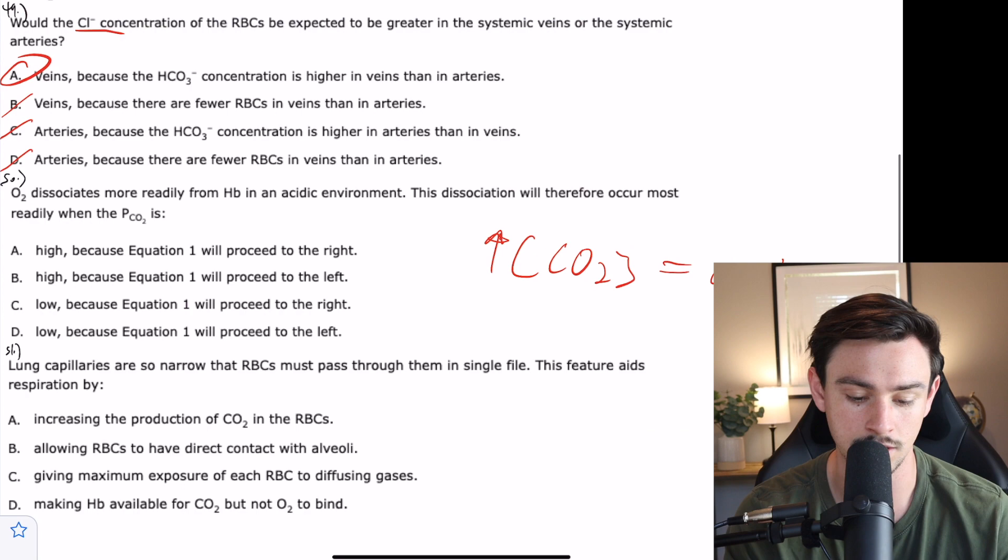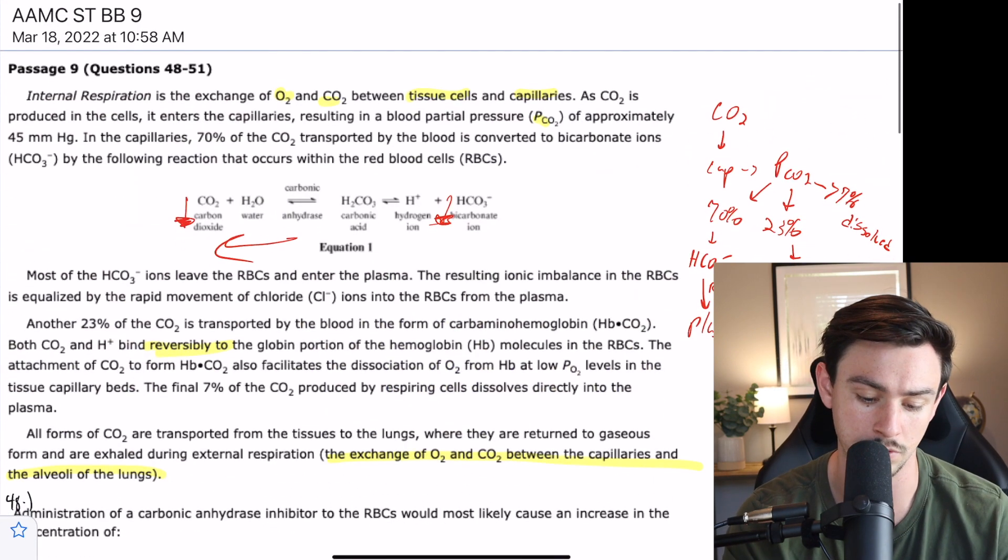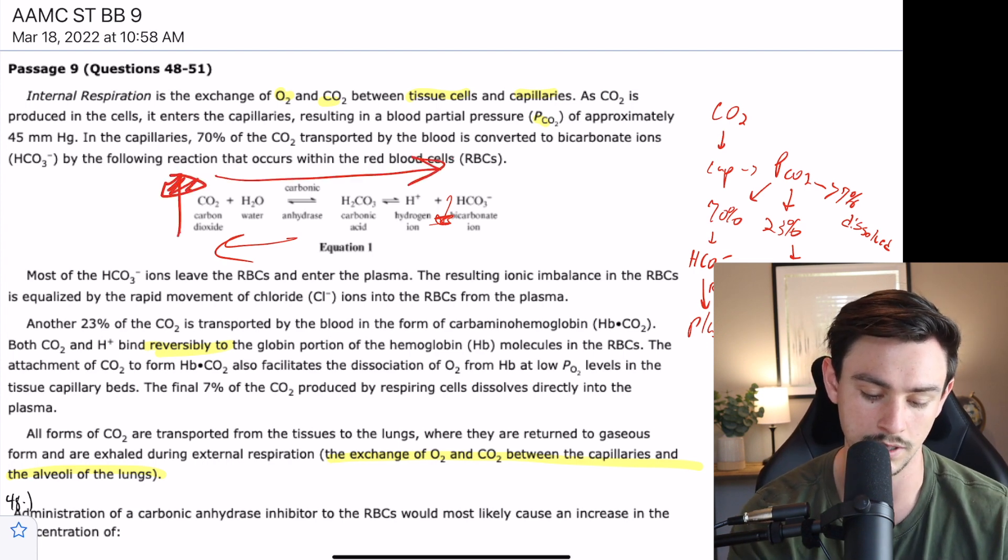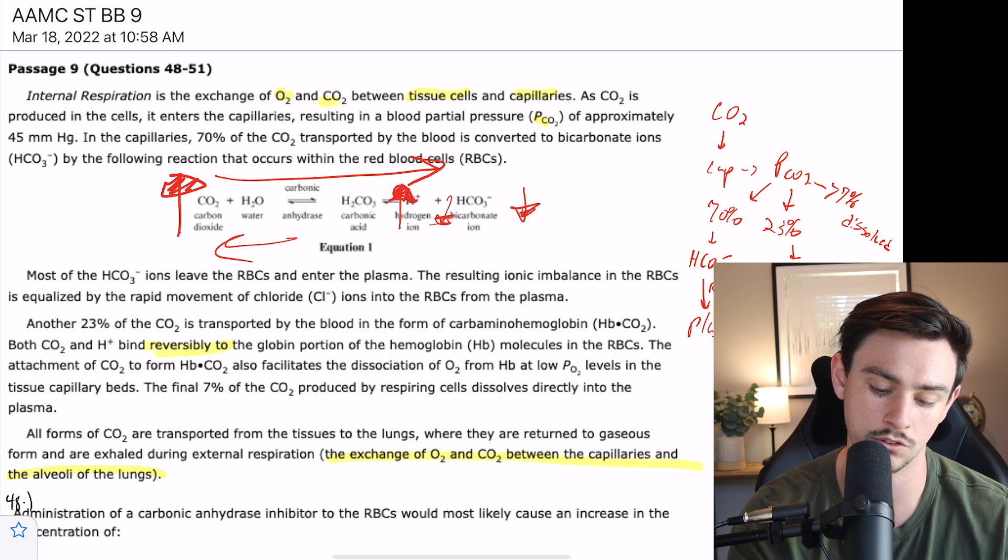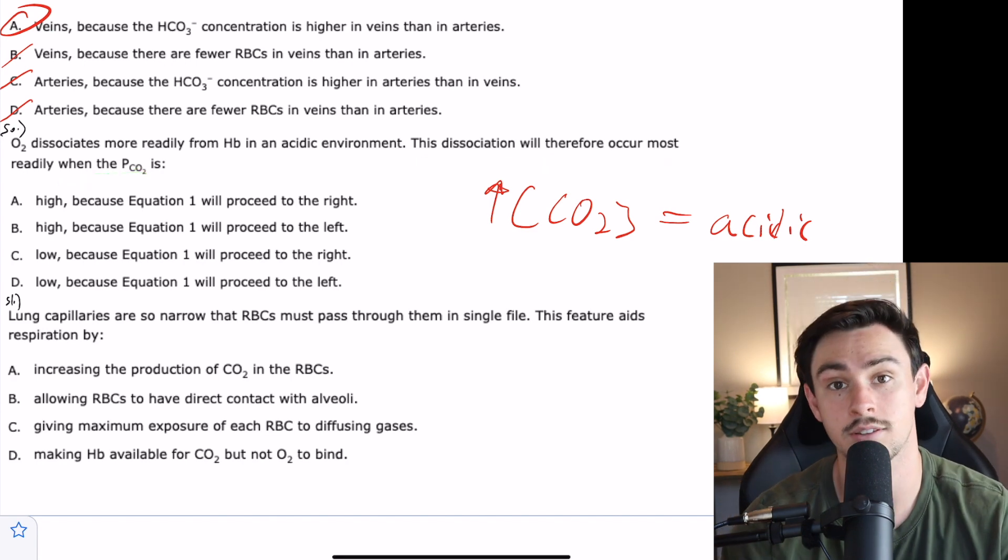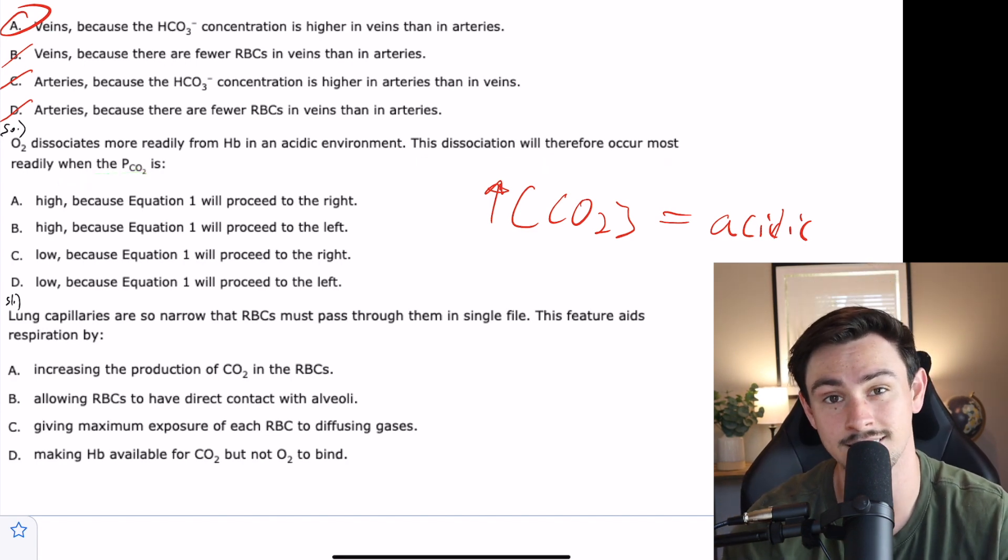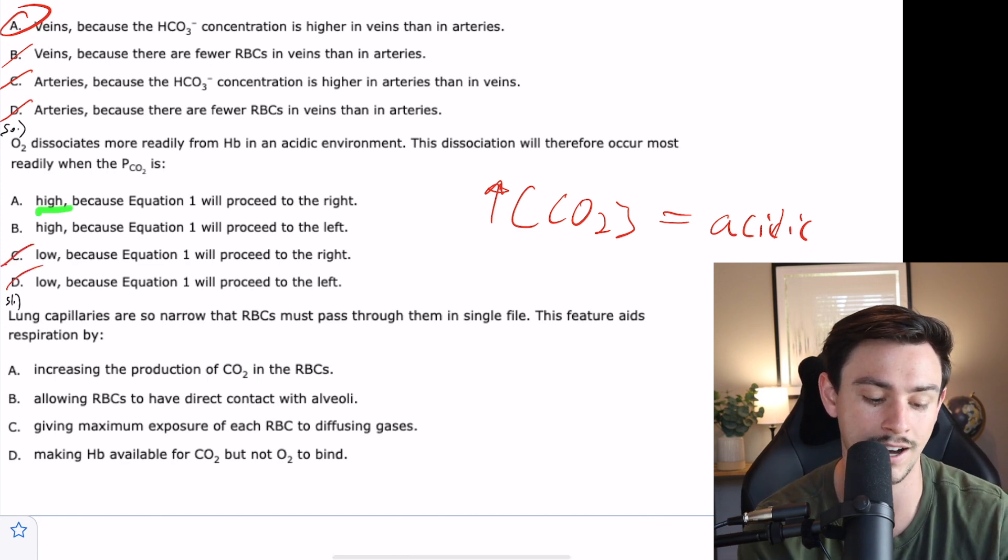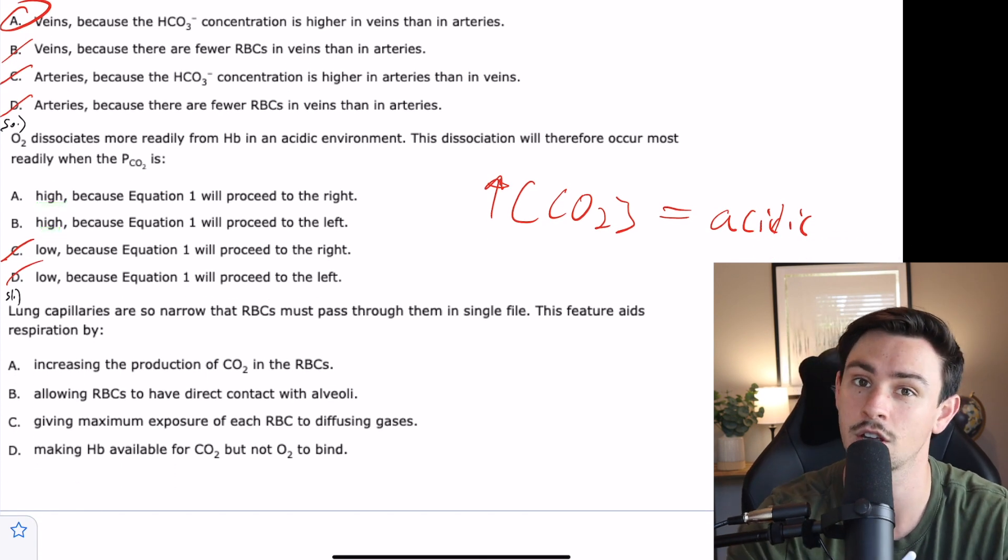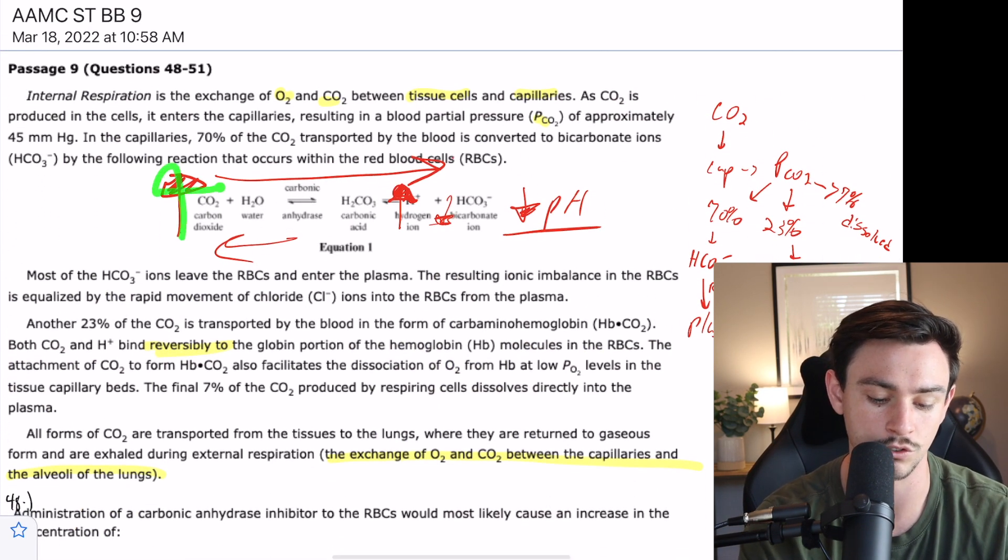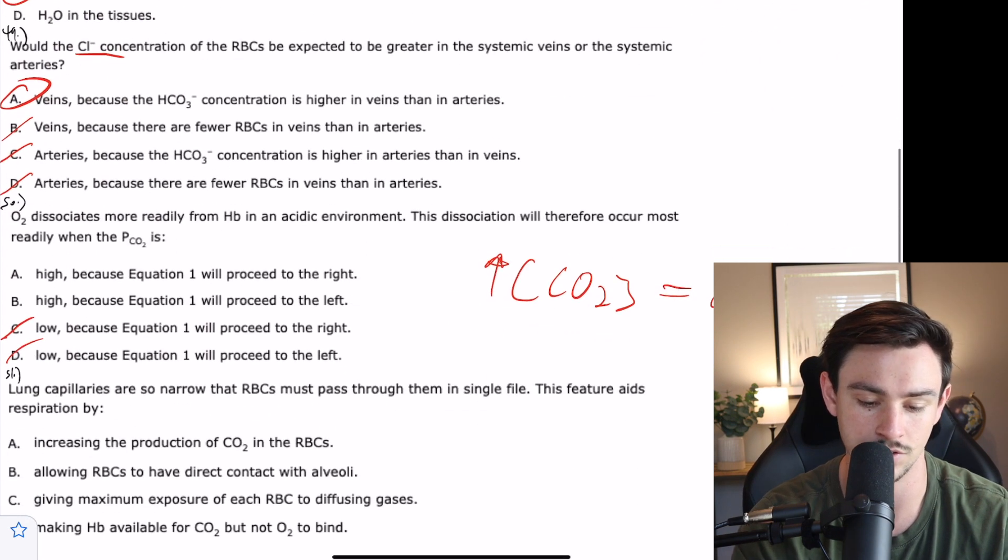Let's look at this equation and use Le Chatelier's principle to figure it out. If we have a high amount of CO2, that's going to drive this reaction to the right, which would mean we would have an increase in hydrogen ions, which means a decrease in pH or acidity. So what PCO2 value will give us an acidic environment? It would be a high one. And if we have a lot of CO2, it's going to drive the reaction to the right. So the correct answer here would be A.